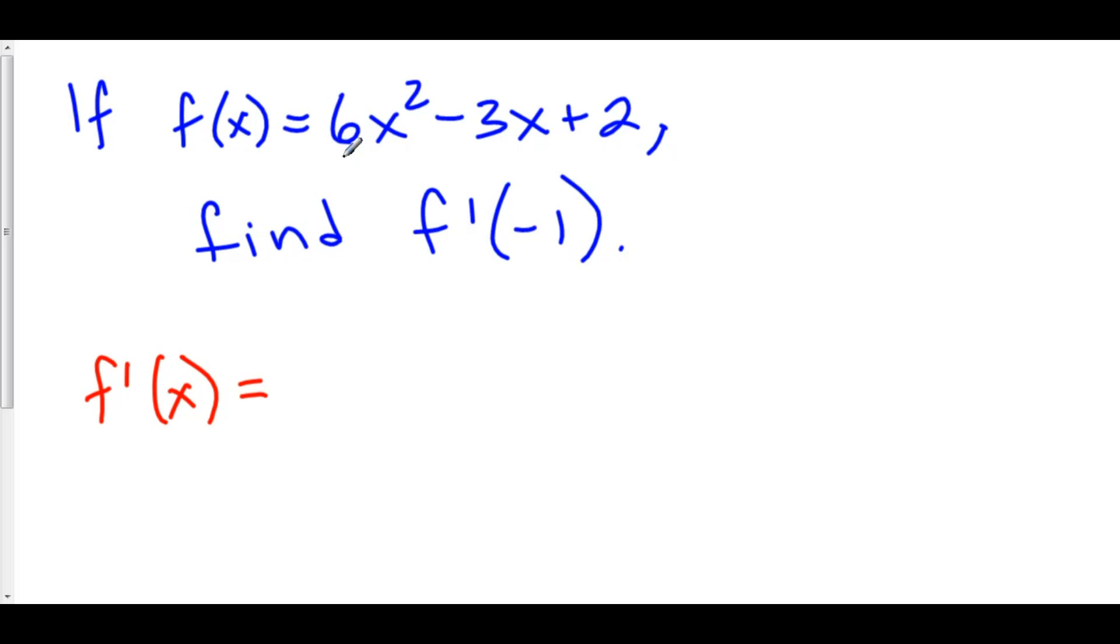Here we can use constant rule. We can pull this 6 out. Or, a better way of thinking about this is this 2 comes down in front and multiplies by the 6. So, 2 times 6 is 12. And then we subtract 1 from the 2 and we get x.